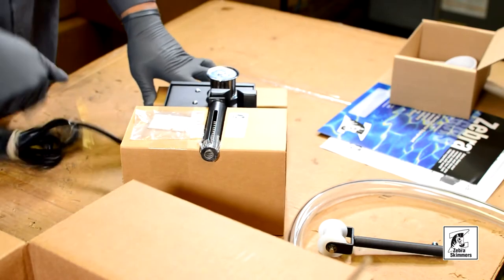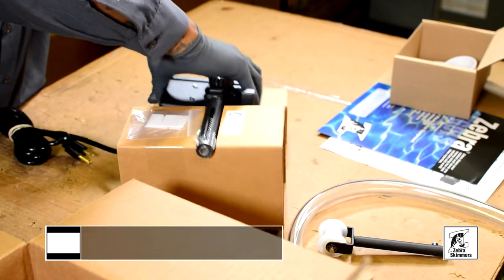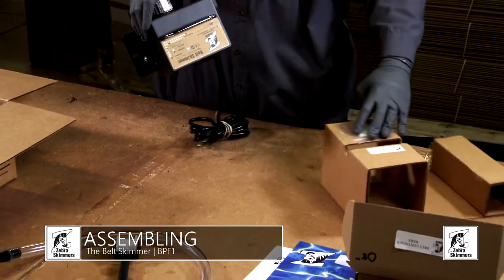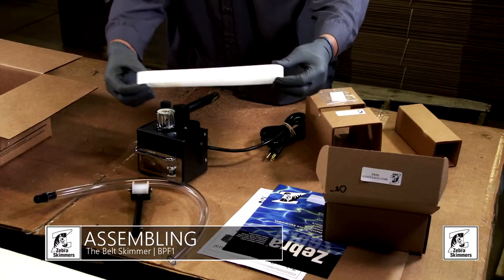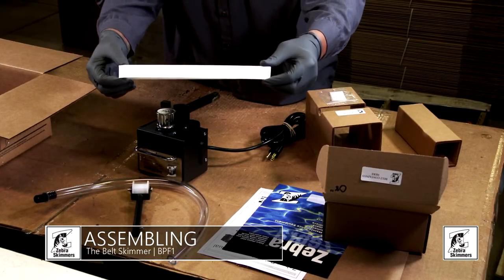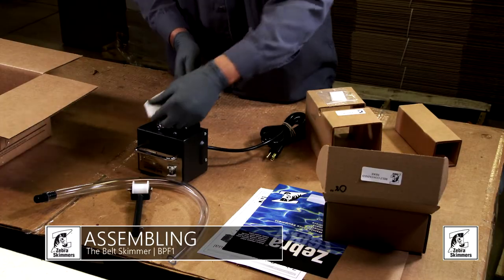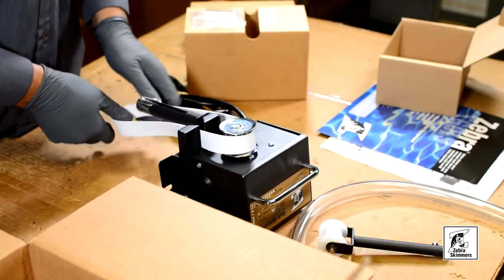Now I'll show the standard way of hooking up the Belt Skimmer. Basically you want to take the unit off, take your belt, and put your belt around the drive pulley.